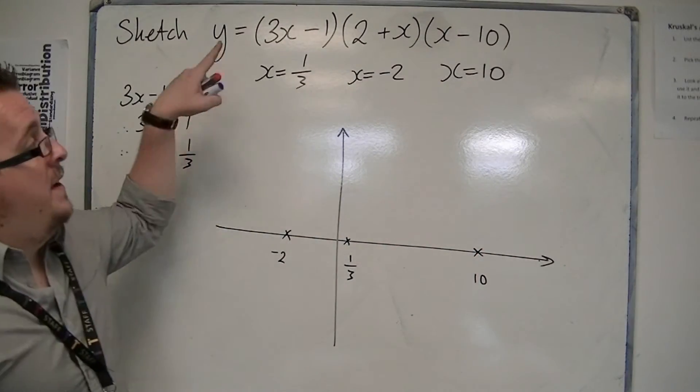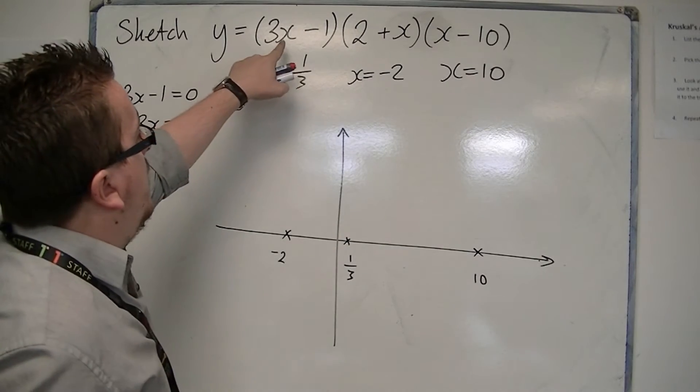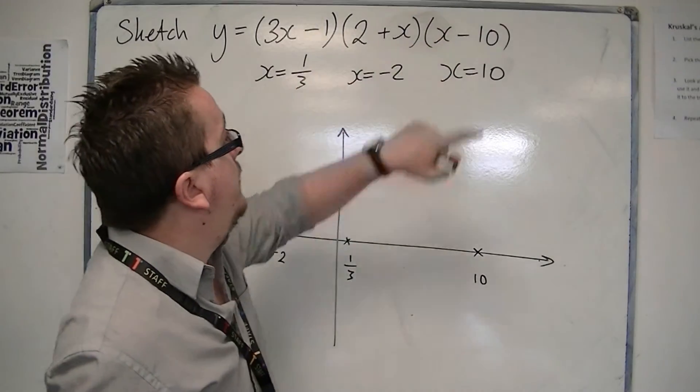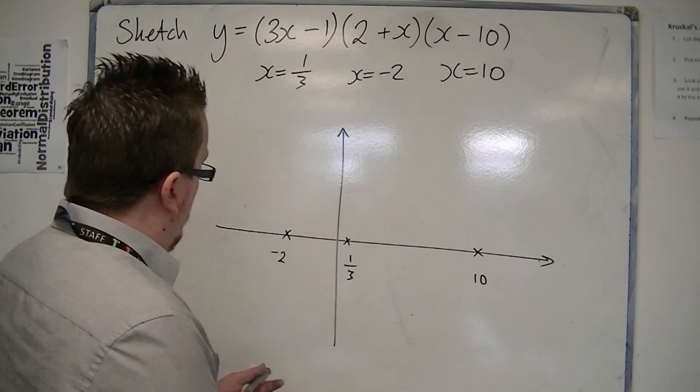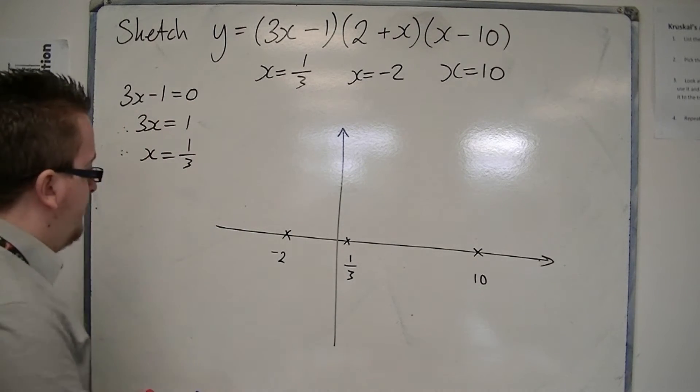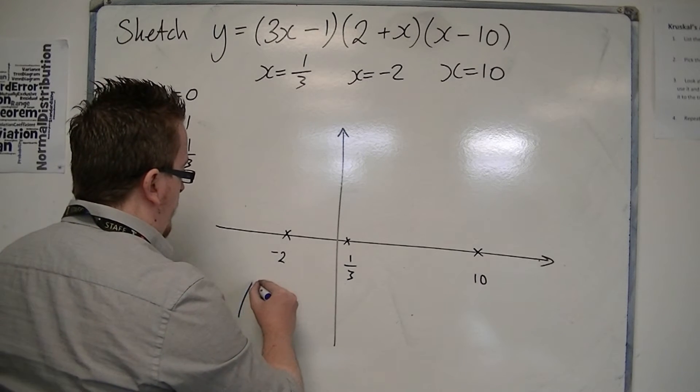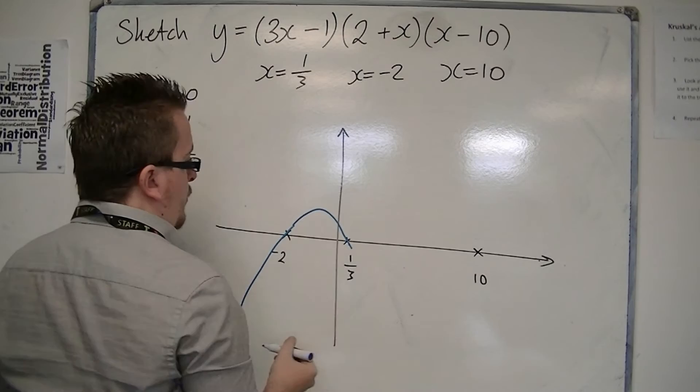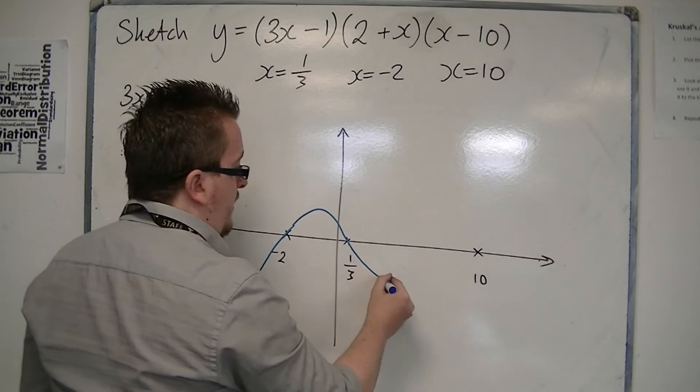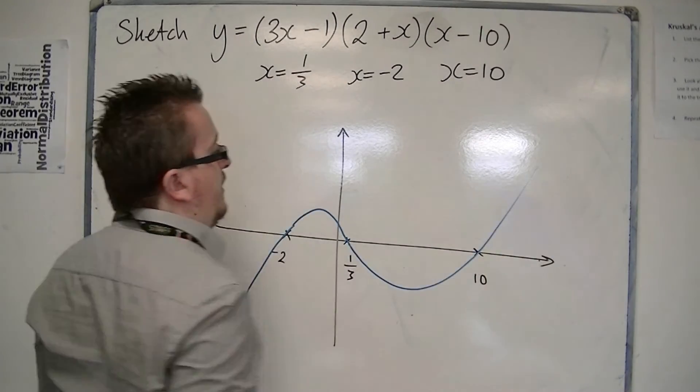If I multiplied out the three brackets, I would get 3x times x times x, so that's 3x cubed. So the number in front of the x cubed is positive. So starting from the bottom left, we would be moving through the minus 2, moving through the 1 third, down, and then through the 10.